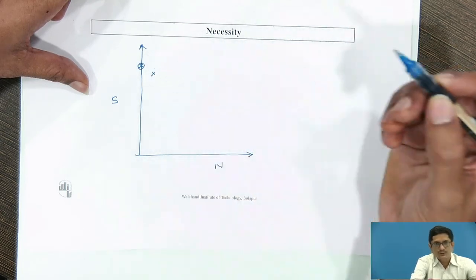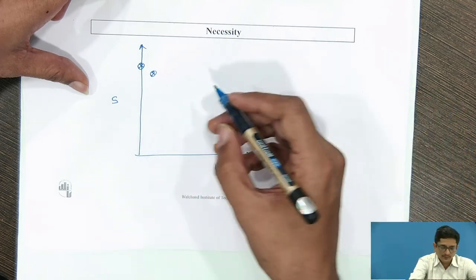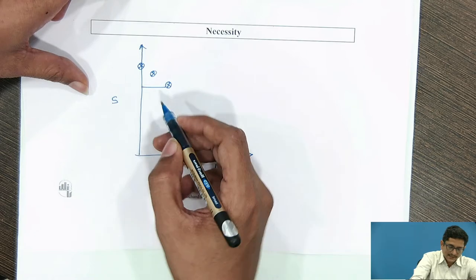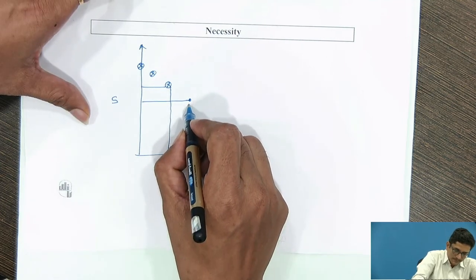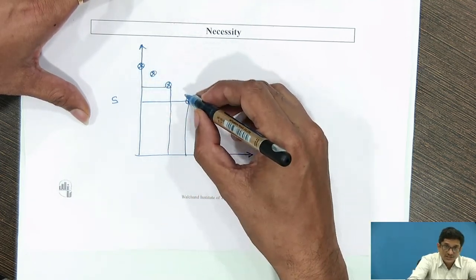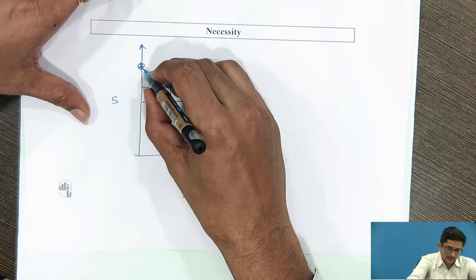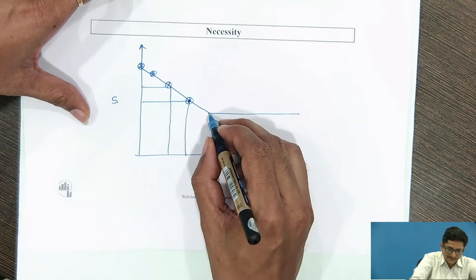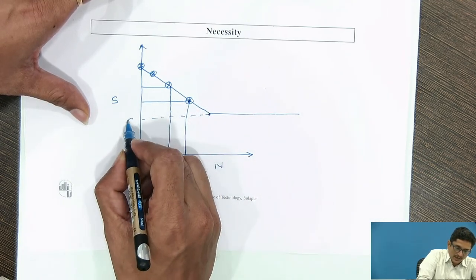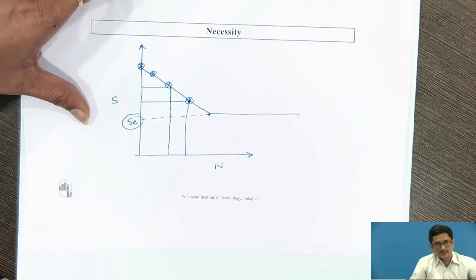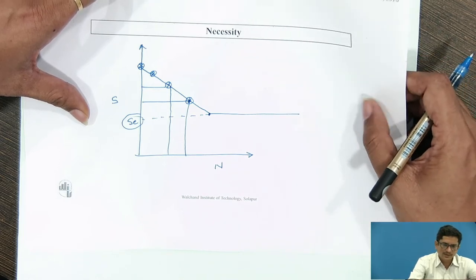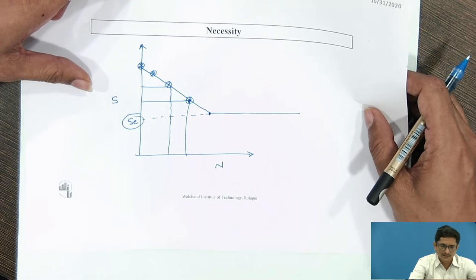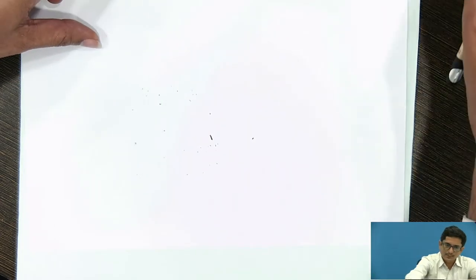For each point on the S-N curve, I need to use a different specimen — use the first specimen, get the value, discard it; use the second specimen, get the S and N value point, and repeat for every subsequent point. Then draw the curve and obtain the required value of SE. This method is time-consuming, laborious, and there may be variation in the answers. Therefore, it becomes necessary to use a different method — the approximate method.